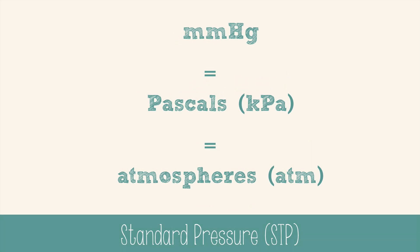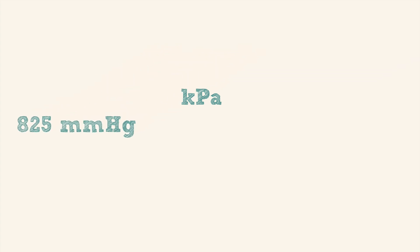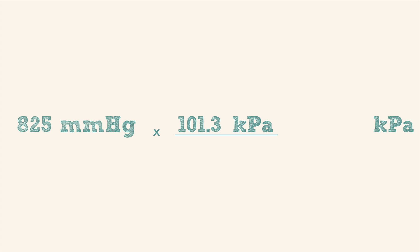You can convert between the different units very easily — you just have to know what the standard pressure is for each of them. At STP, millimeters of mercury is 760, you need 101.3 kilopascals, and one atmosphere. To convert, we use dimensional analysis. For example, if you had a pressure of 825 millimeters of mercury and needed the units in kilopascals: start with what you're given, put kilopascals as your answer units, knowing that 101.3 kilopascals equals 760 millimeters of mercury. Set up a conversion factor, cancel your units, do the math, and you get 110 kilopascals. Pretty easy.